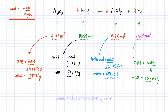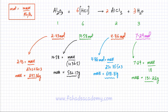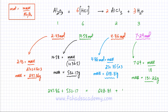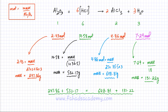We've been able to figure out all the masses of all substances in this reaction — both reactants and products. You can check by applying the law of conservation of mass: the total mass of reactants should equal the total mass of products. So 247.86 + 532.17 should equal 648.81 + 131.22. This acts as a counter-check to confirm whether your calculated masses are correct.